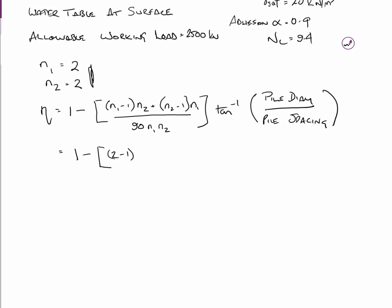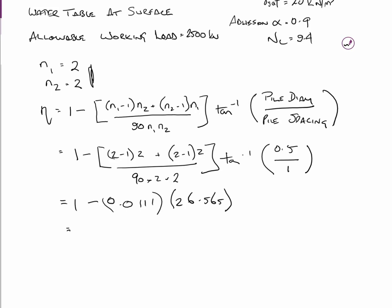So (2 minus 1) times 2 plus (2 minus 1) times 2 divided by 90 by 2 by 2, all times tan to the minus 1, 0.5 on 1, which comes down to 1 minus 0.0111 times 26.565, which equals NETA equals 0.705.